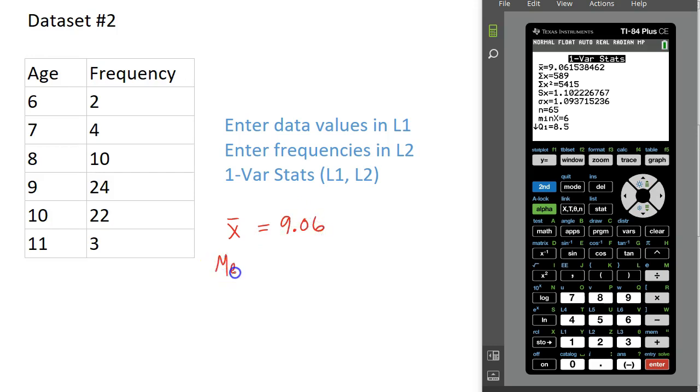We are given a median of, we have to scroll down to see the median, 9. And the mode, we don't need a calculator to find the mode, because we know that age 9, there were 24 students of age 9.